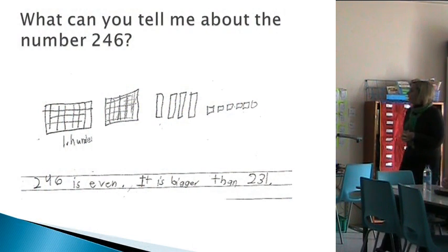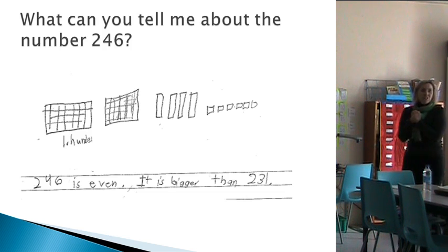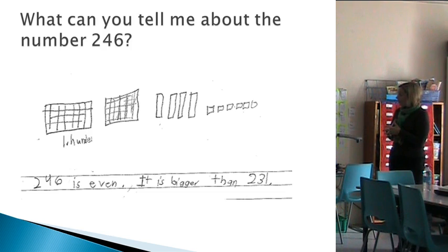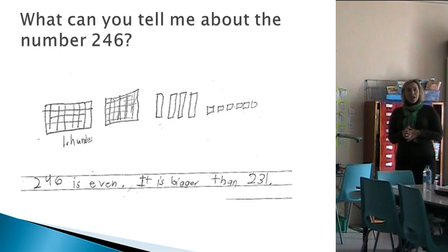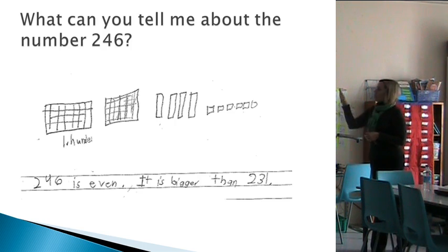Here's an example of grade three. I included this one because he doesn't really have a lot. He modeled the number, he said 246 is even, but he didn't really explain how he knew it was even. He said it's bigger than 231.